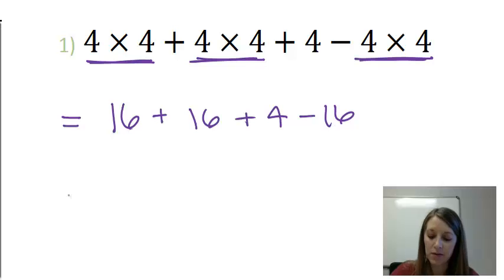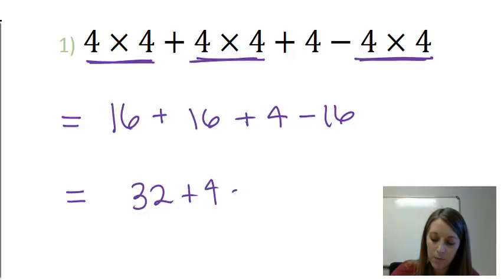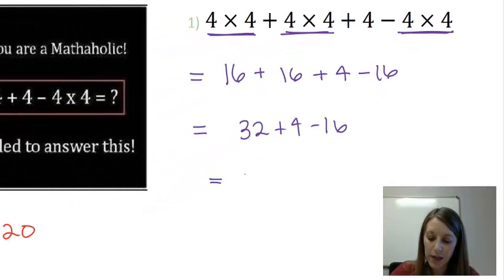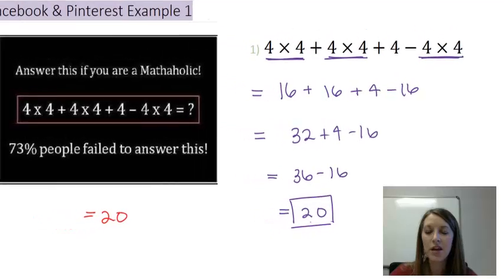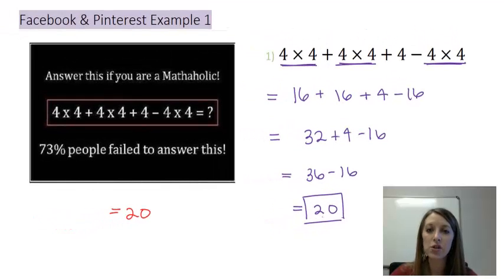Now it's all addition and subtraction, so I'm going to work it from left to right. So 16 plus 16 gives me 32, 32 plus 4 gives me 36, and 36 minus 16 gives me the final correct answer of 20. So hopefully that's what you got first or at least the second time you worked through this problem.